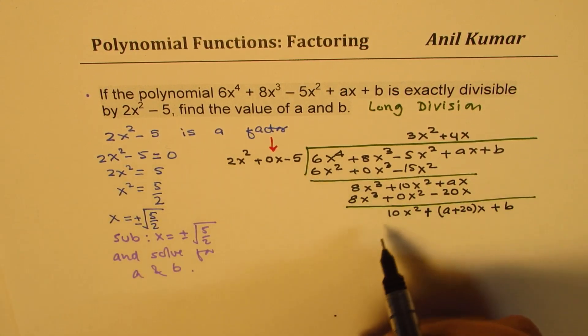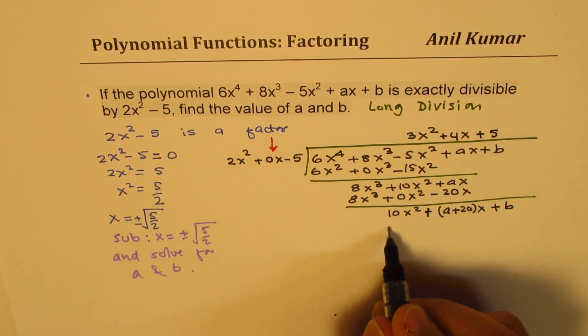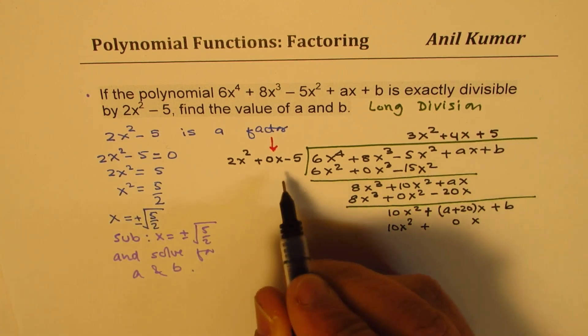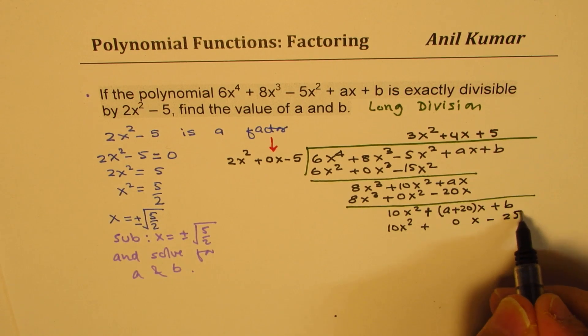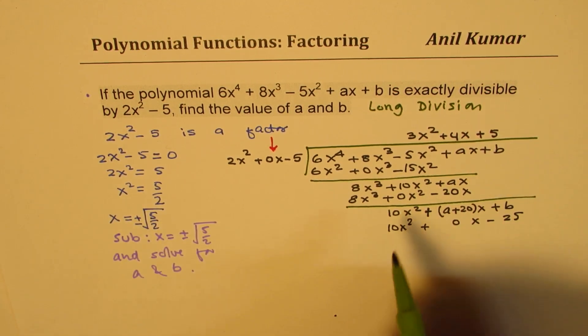We have to get 10x squared. So now I'll multiply by 5. So we get 10x squared plus 0x and 5 times 5 is 25. You get 25 here. Now again, we'll just take the difference.